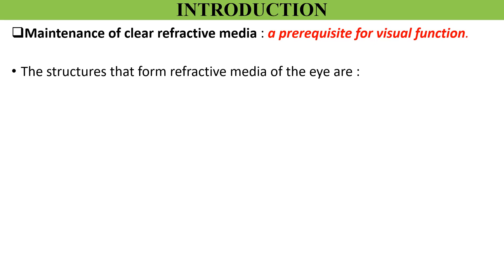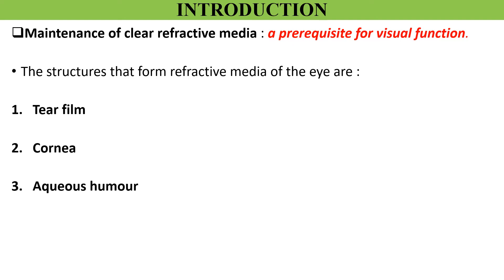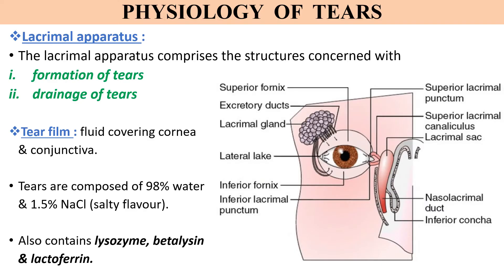The main prerequisite for visual function is the maintenance of a clear refractive media of the eye. In simple words, a human eye can see clearly only if the refractive media of the eyes are maintained as normal. The major factor responsible for the transparency of the ocular media is the avascularity of the cornea and the lens. The structures forming the refractive media of the eye from anterior to posterior are: tear film, cornea, aqueous humor, crystalline lens, and vitreous humor.